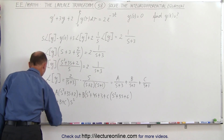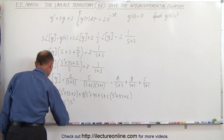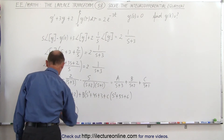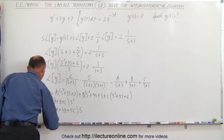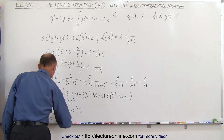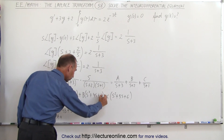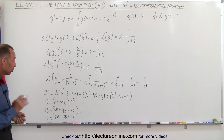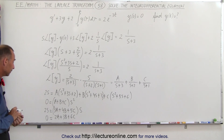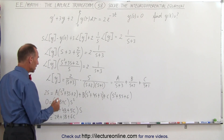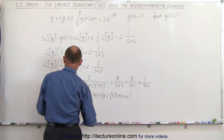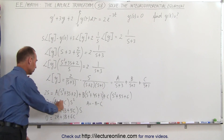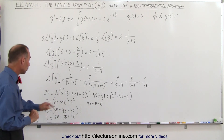Equating coefficients: the s-squared term gives 0 equals A plus B plus C; the s term gives 2 equals 3A plus 4B plus 5C; and the constant term gives 0 equals 2A plus 3B plus 6C.